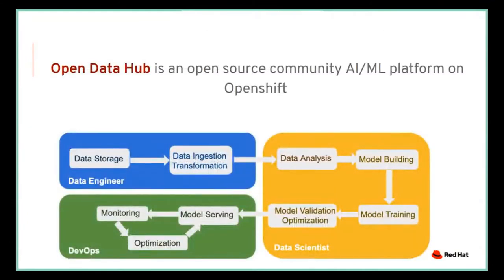The very last phase goes into the DevOps realm — moving and serving the model into production. This phase is not a static one-stop delivery phase; it's a constant optimization phase. The cycle of monitoring, optimizing, and serving happens for the lifetime of your model. And at the end of the day, it's that collaboration between your data engineers, data scientists, DevOps, and business developers.